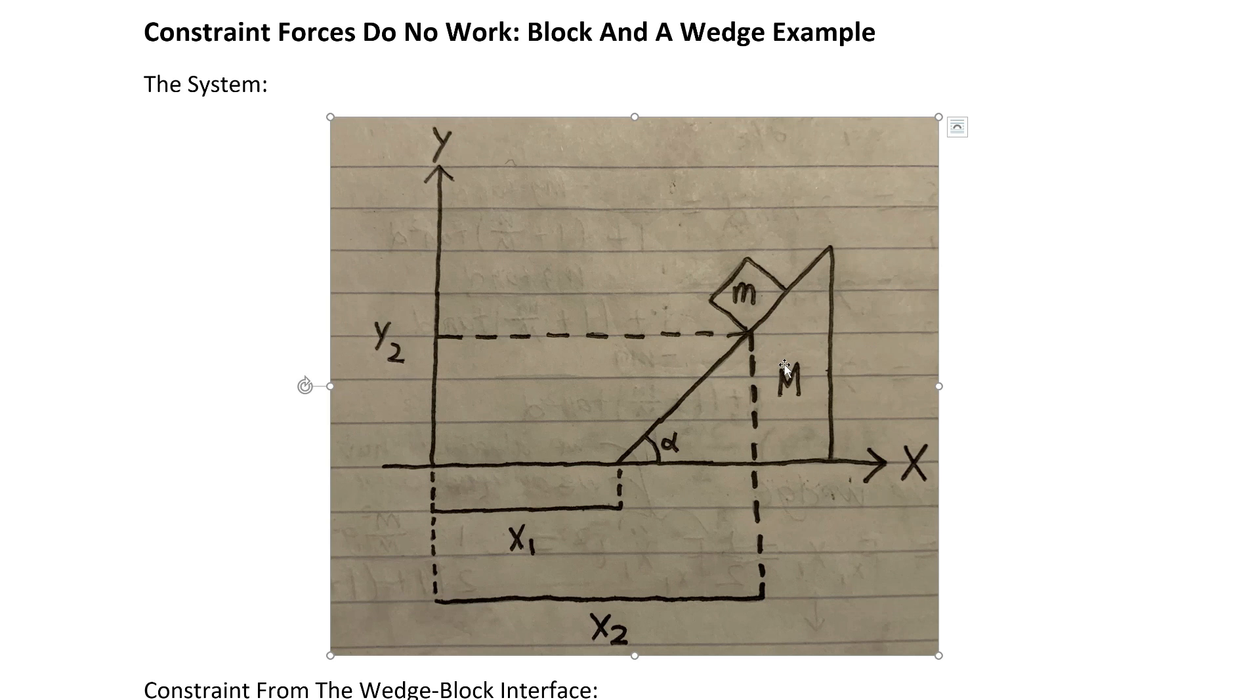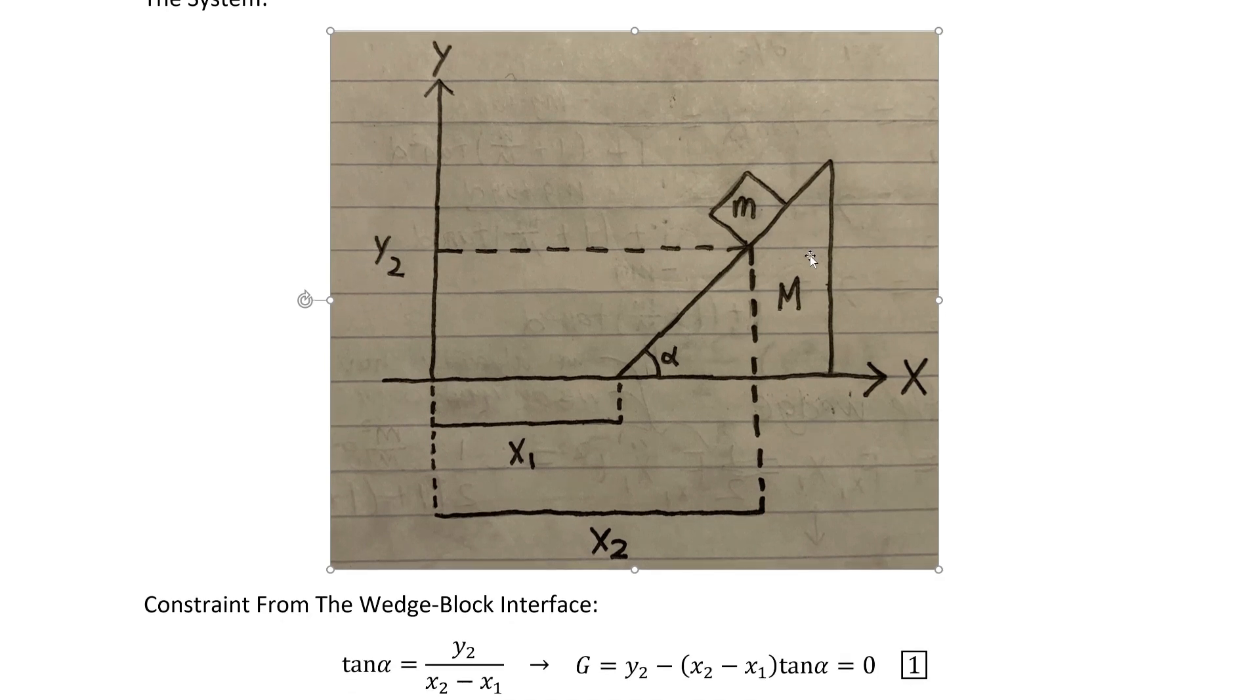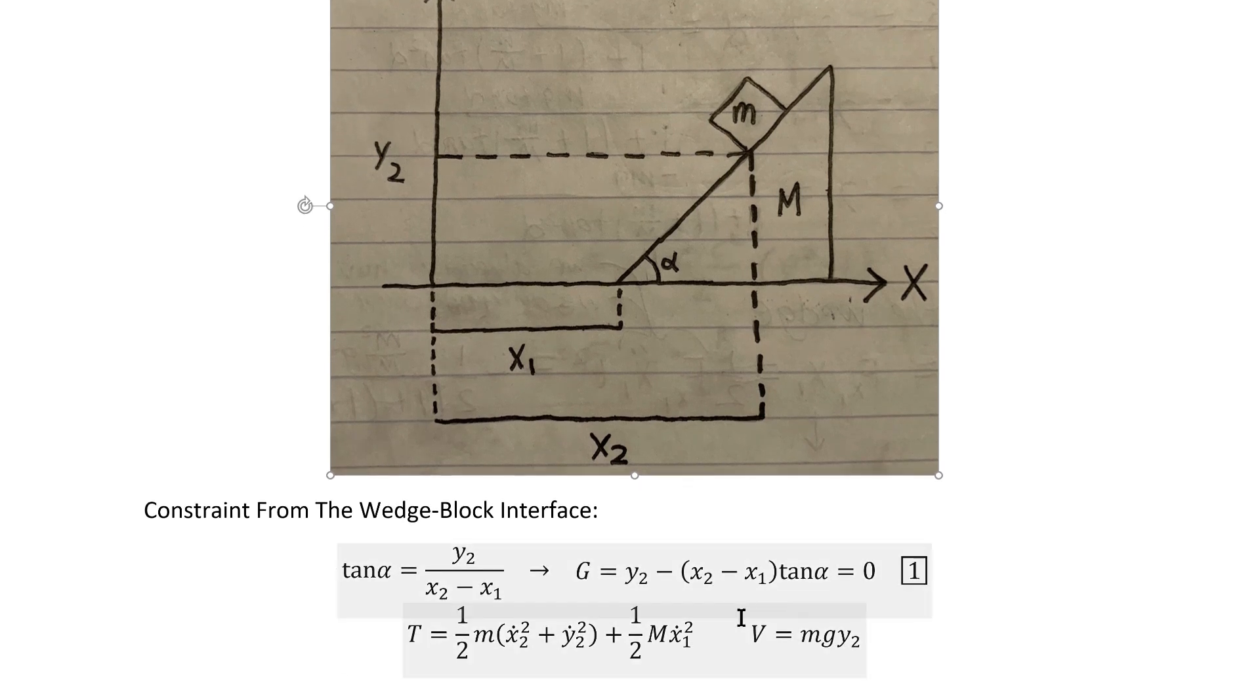We're going to study the motion of this system while the block is still sliding down the angled side of the wedge. Clearly, this mass is constrained to move on the surface of the wedge, and as a result we can use trigonometry to derive that constraint. Using ordinary trigonometry rules, we can see that if this block is constrained to move on this surface here, then y2, the length of this side of this smaller triangle, over the length of this side, which is x2 minus x1, must equal the tangent of the angle alpha. We can then rearrange that constraint into one that's a bit easier to work with, specifically because it makes taking derivatives easier. We'll call that equation one.